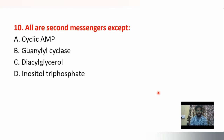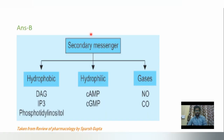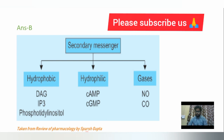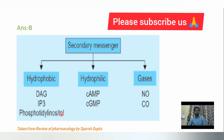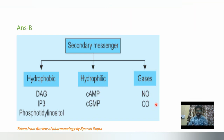Last question: all are second messengers except — options are cyclic AMP, guanylyl cyclase, diacylglycerol, inositol triphosphate. Cyclic AMP (option A), diacylglycerol (option C), and inositol triphosphate (option D) are all second messengers. Only option B, guanylyl cyclase, is not a second messenger. The second messengers include DAG (diacylglycerol), IP3, cAMP, cGMP, NO, and CO, as shown in the review of pharmacology by Sparks Gupta.